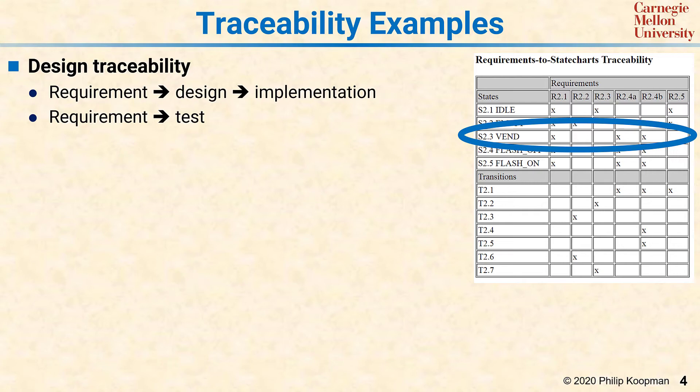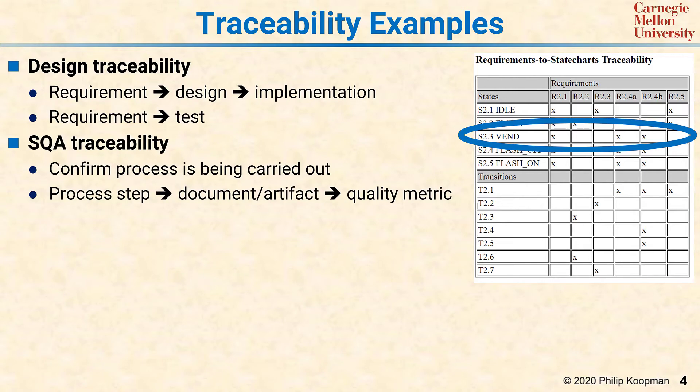Another type of traceability is software quality assurance traceability, which has to do with confirming a process is being carried out. For SQA traceability, every process step — every box in the V — should be producing some sort of document or artifact. That document or artifact, represented by the arrows in the V, is a piece of information transferred to the next step. If you can't find that document or artifact, you have to ask whether the step really happened. Ideally, you also have some sort of quality metric on whether the design and artifact were done according to reasonable quality standards.